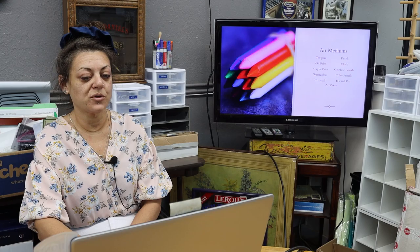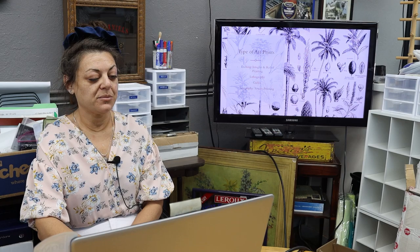We're going to talk about art prints first because that's what we come across most frequently. There are a few different types of art prints: etchings, which include intaglio and relief printing, lithography, giclée, serigraphy which is screen printing, and monotype printing which we don't come across very frequently.